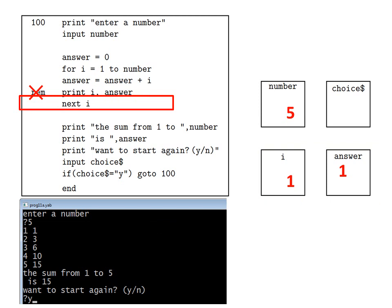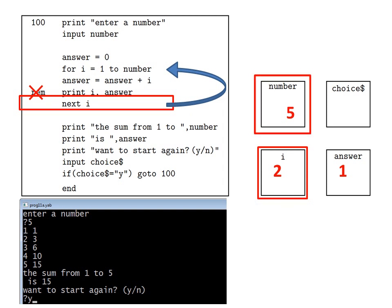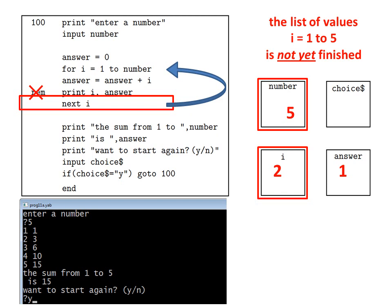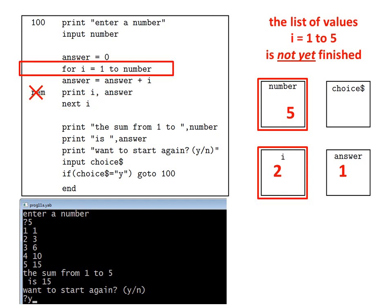Then the computer executes next i, which means it takes the current value of i and adds one to it. Then the computer checks to see if it needs to jump back to the for i equals one to number line. Since i equals two does not yet exceed number, which is five, the list of values one to five is not finished yet, so the computer does jump back to the for i line and program flow continues from there.